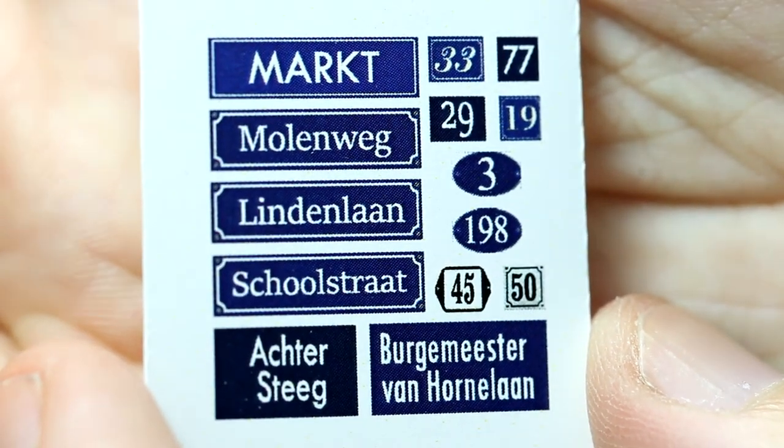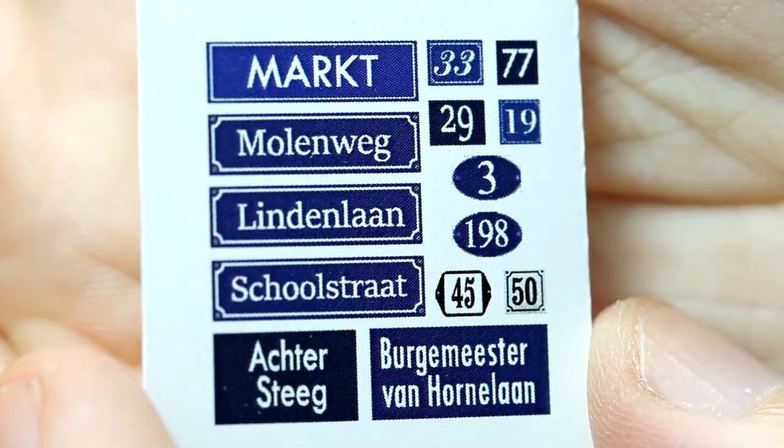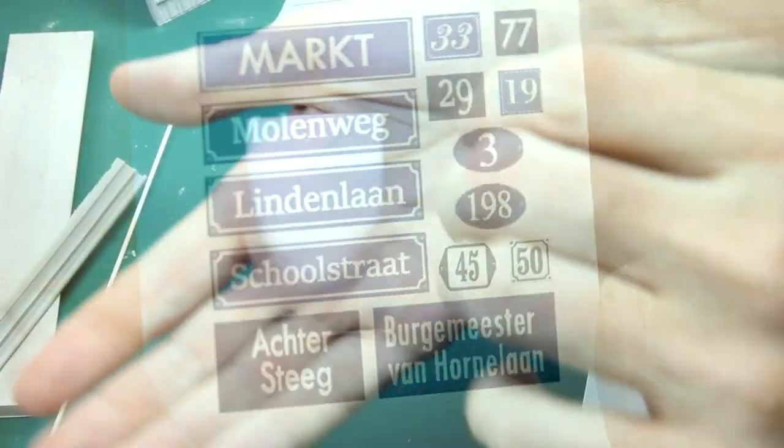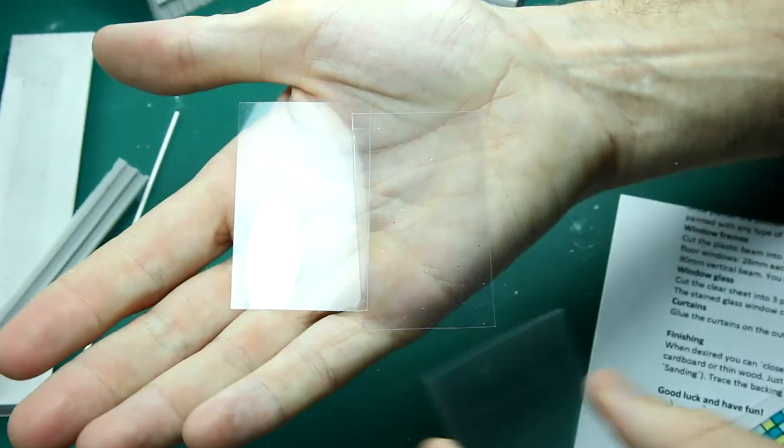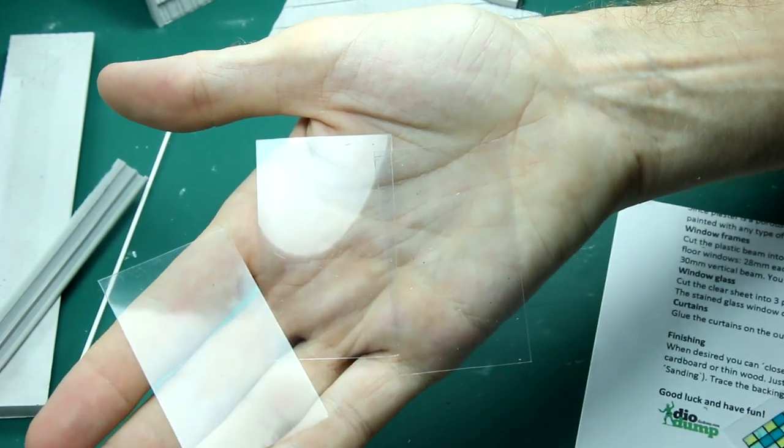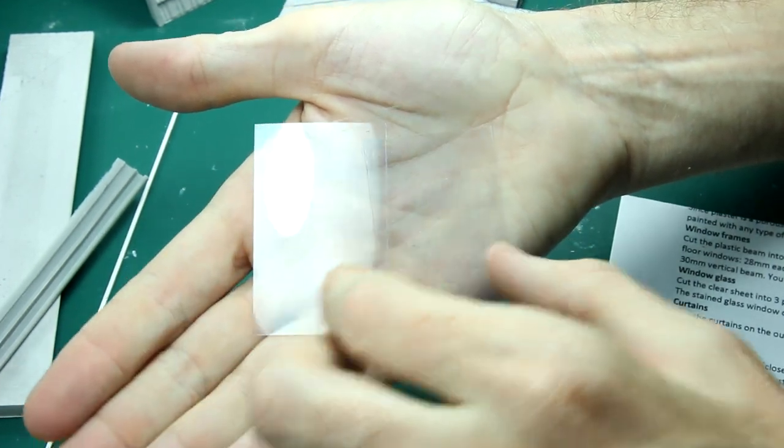There's also this set of street signs in Dutch and numbers as well. And you also get three pieces of clear acetate to act as the windows.